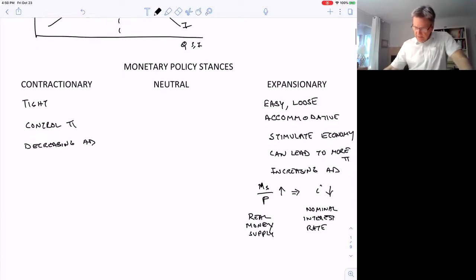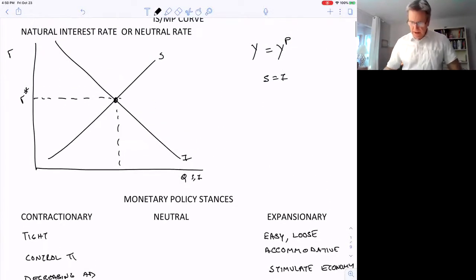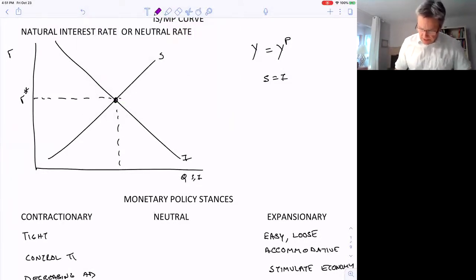Now we can also think of these policy stances in terms of the neutral rate of interest. So an expansionary policy is going to bring down interest rates. So in terms of this model up here that we were looking at, if the interest rate in the economy, R, is down here, less than R star because of the Fed, we can look at that as an easy monetary policy.